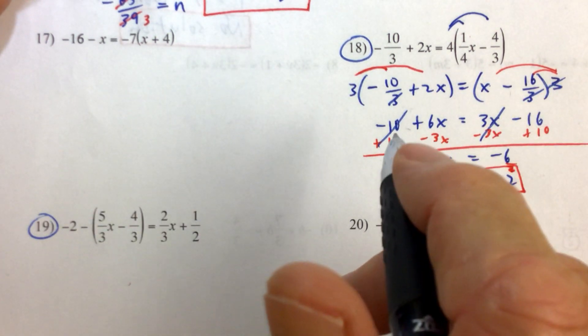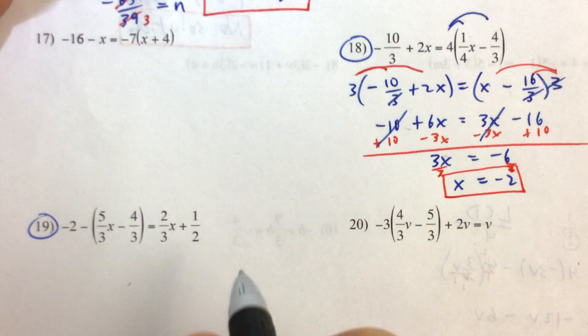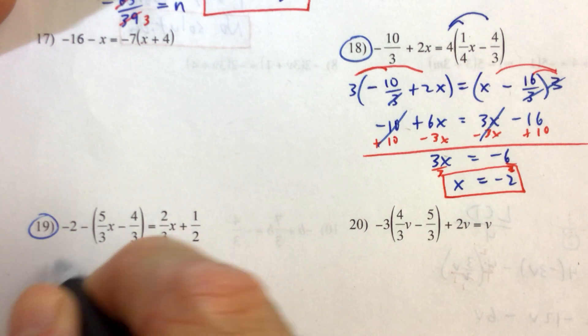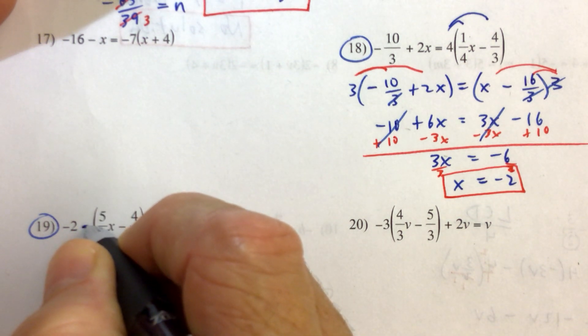Let's see if we can simplify our equation here in any way before we go ahead and clear the fractions. Let's get rid of the fractions first. Sorry, let's get rid of the parentheses first. That's what I meant to say. Let's distribute this minus sign here.